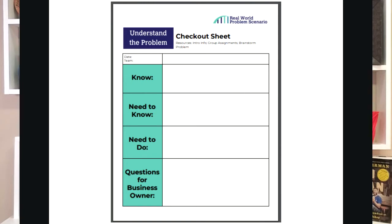The last part of this phase includes getting the students ready to engage with the business partner. I have the student groups brainstorm questions that they might want to ask the business partner related to the problem or related to the business in general. I also have the students fill out a KWL chart to get them ready for the business partner's visit. They will use this KWL chart when the business partner arrives to jot down notes and other important pieces of information as they actively listen to the partner's presentation.